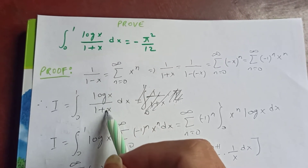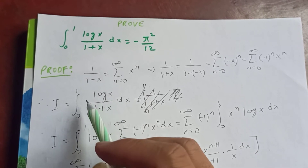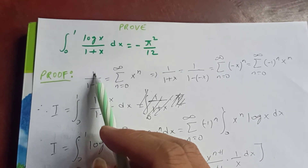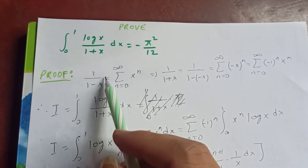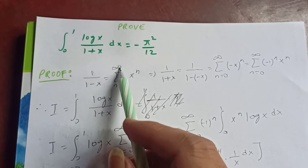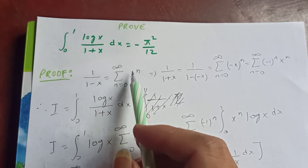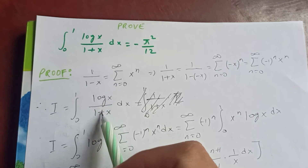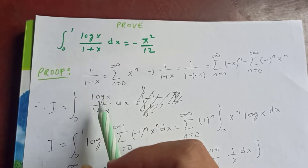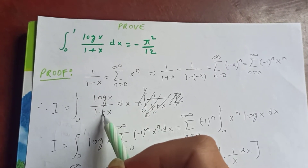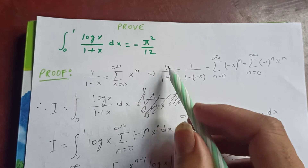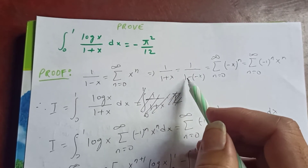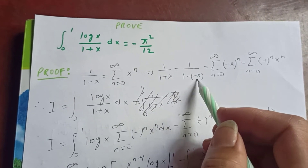Now we know that from geometric progression, 1 over (1 − x) is nothing but the sum from n equal to 0 to infinity of x^n. We want a plus sign, so since we have (1 + x), we write 1 over (1 + x) as 1 over (1 − (−x)).